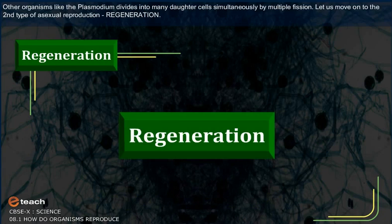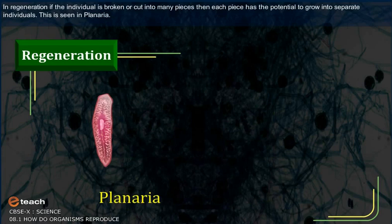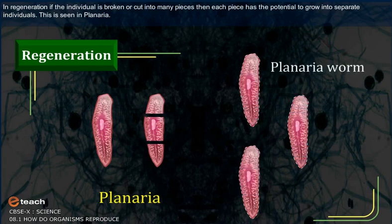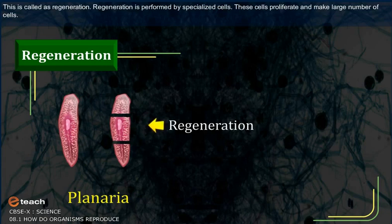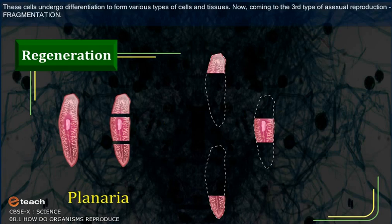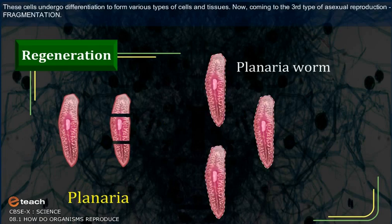In regeneration, if an individual is broken or cut into many pieces, each piece has the potential to grow into a separate individual. Regeneration is performed by specialized cells. These cells proliferate and make a large number of cells, which then undergo differentiation to form various types of cells and tissues.